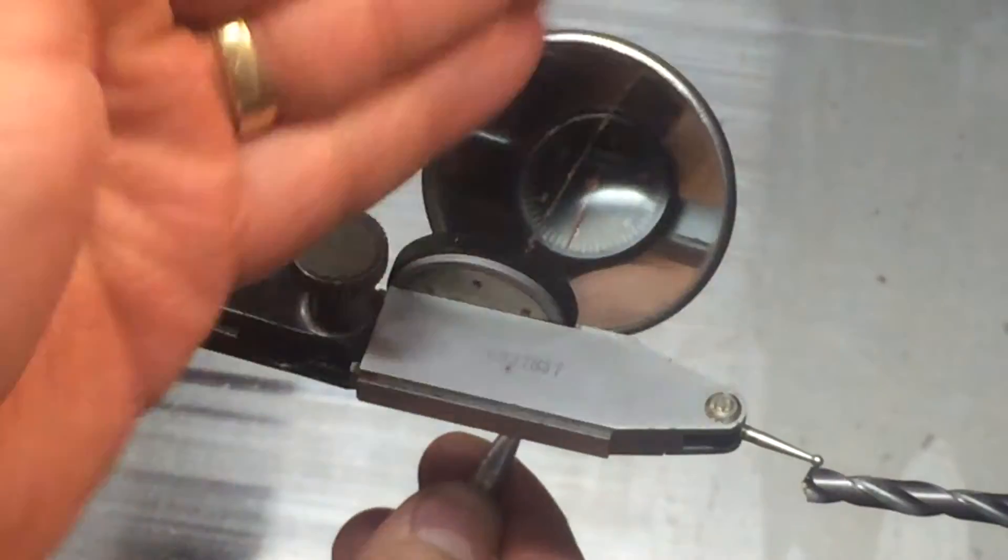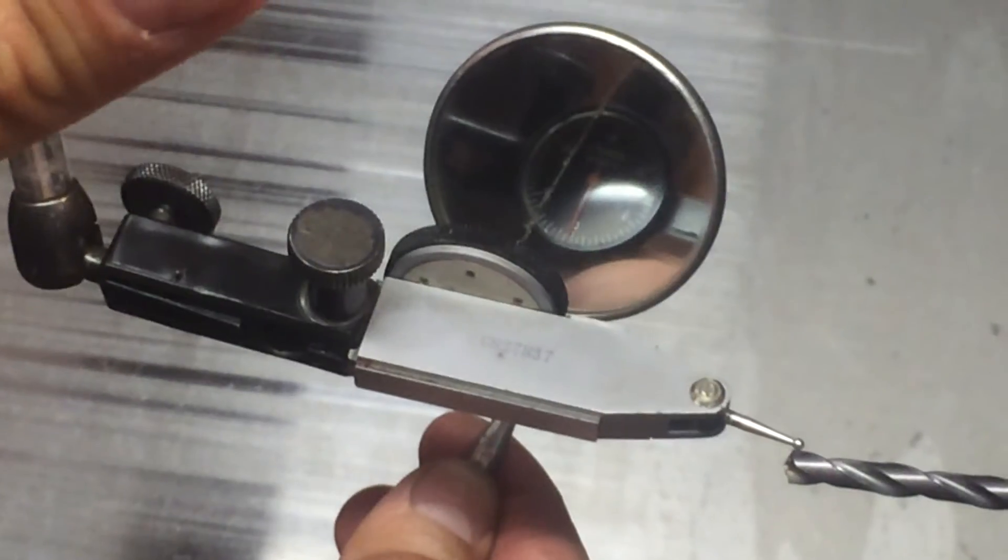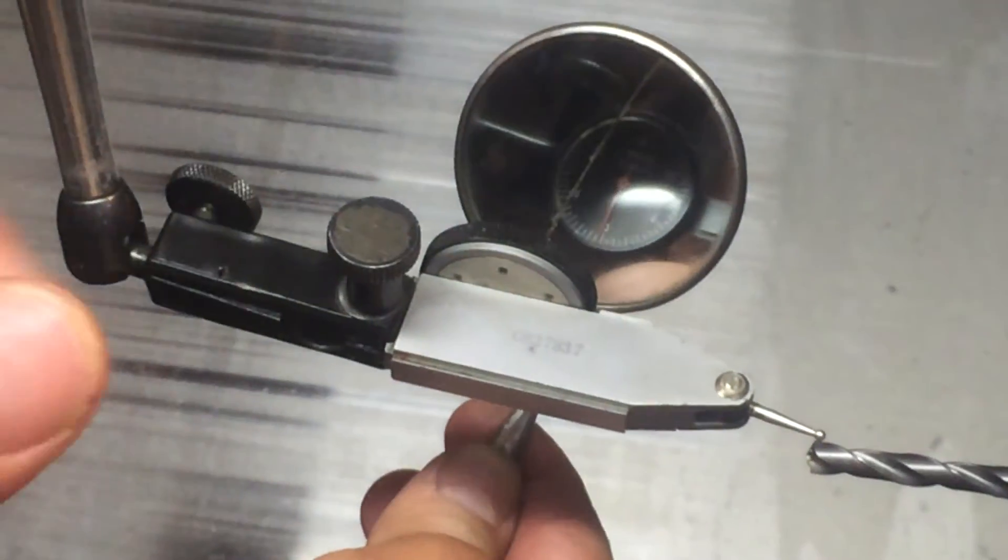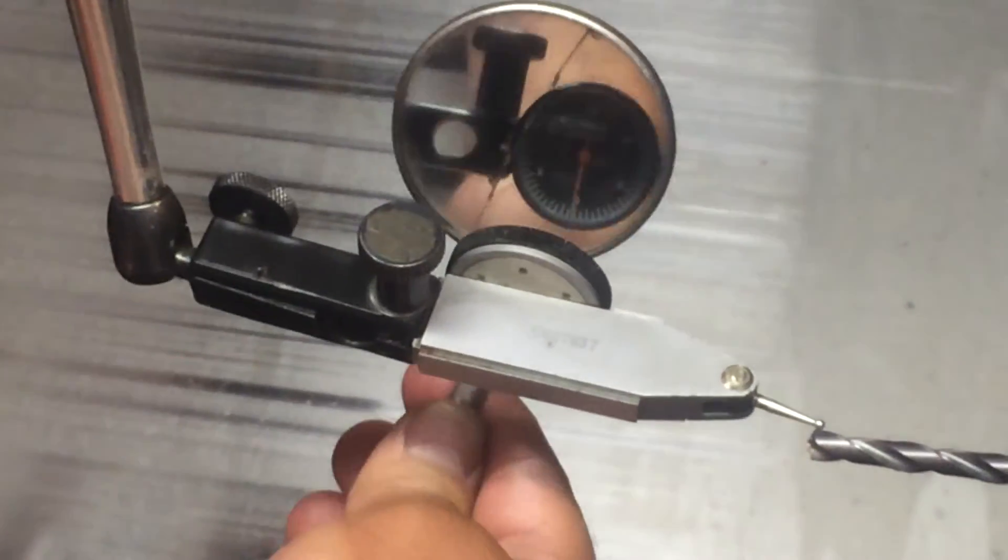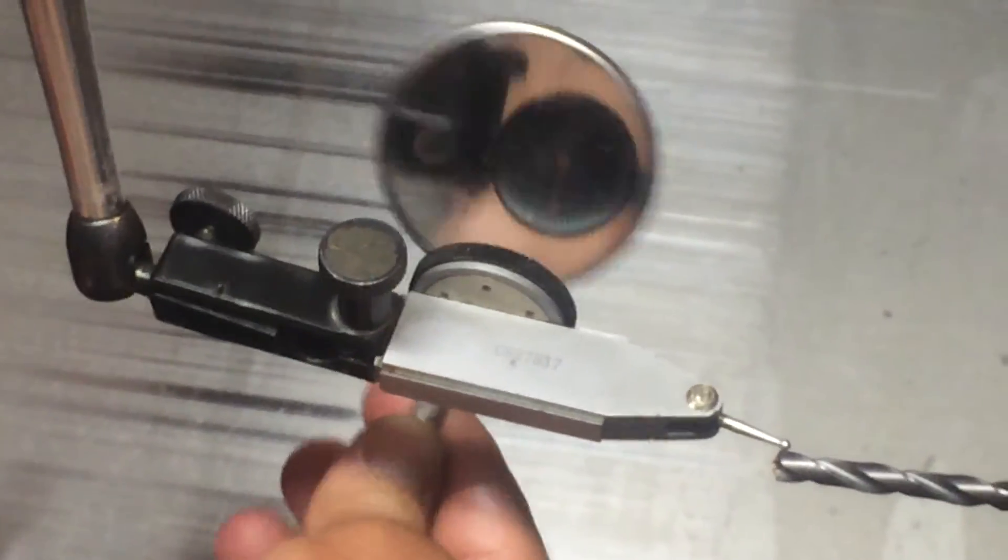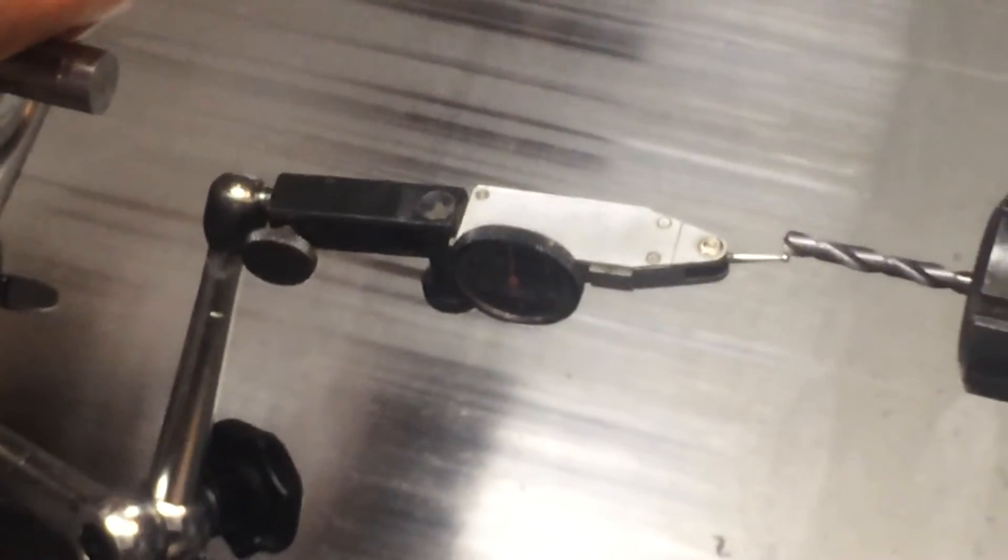Sometimes you've got to keep going back and forth, back and forth. Move it a couple of tenths, check your indicator, re-zero it out. Move it a couple more tenths until you finally get that perfect readout of zero on one side and zero on the other side.